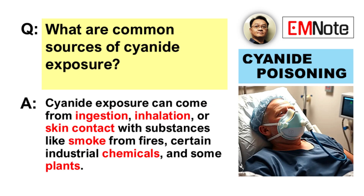What are the most common sources of cyanide exposure? Exposure can result from inhalation of smoke in structural fires, ingestion of cyanogenic compounds like certain seeds or industrial chemicals, and less commonly skin contact. Industrial settings, mining, and chemical laboratories pose higher risks.